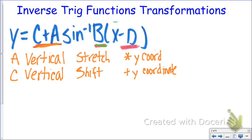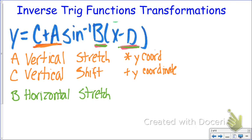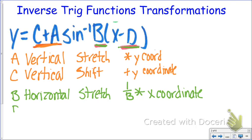There are two transformations that involve the horizontal: B and D. B is going to be a horizontal stretch or compression. What's a little different now is instead of just multiplying my X coordinate by whatever B is, I'm actually going to multiply by 1 over B — the reciprocal of B, or you're dividing by B. That's the biggest mistake people make; all that horizontal stuff is kind of backwards from what you think. Then D is still going to be a horizontal shift.